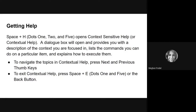The other way you can get help is by pressing Space+H, and that's going to open up your context-sensitive help. A dialogue box will open and it will provide you with information about the context that you're focused in, list commands that you can do, and explain how to execute them. To navigate the topics in contextual help, use your next and previous thumb keys, and when you're done, do Space+E for exit or use the back button.